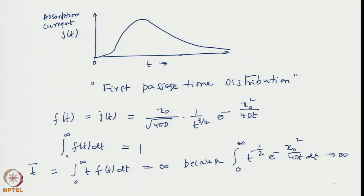We started some time ago with the central limit theorem and the restrictions we put on the mean and standard deviation. At that time we saw there is a distribution called the Cauchy distribution which does not have higher moments. We have now got one more example of such distributions arising naturally in the context of random walk.